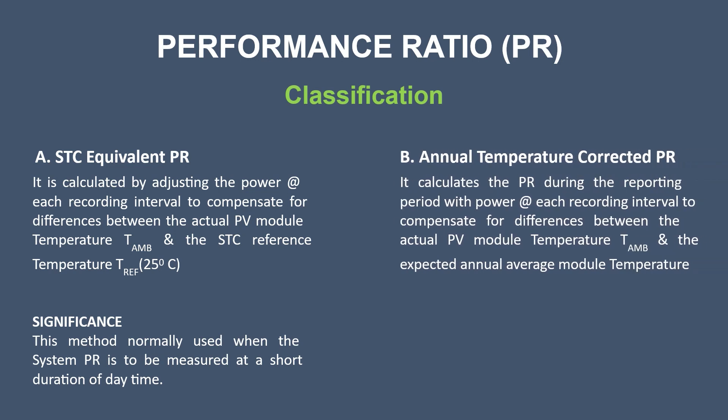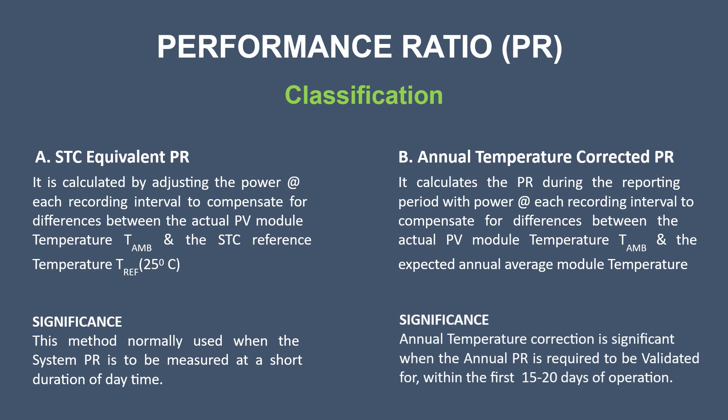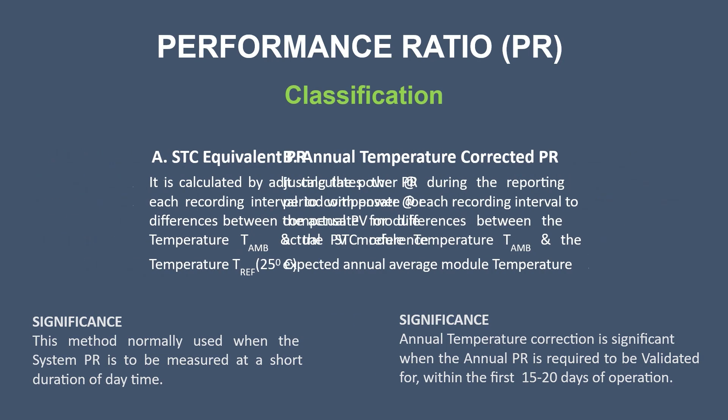Annual temperature corrected PR is similar to the previous one. Here, PR is calculated by adjusting the reporting period with respect to power to compensate for the difference between the actual PV module temperature and the expected annual average module temperature. This annual temperature correction is very significant when the annual PR is required to be validated within the first 15 to 20 days of operation.